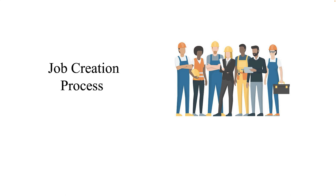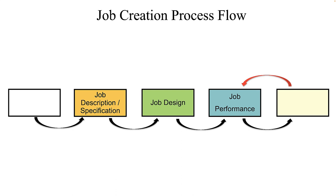Before a manager can redesign a job, they have to know what the duties and tasks of the job actually are. You'd be surprised how little some direct supervisors know about their subordinates' jobs. This is the job creation process flow from job analysis to job redesign and all points in between. There are some recommended formal steps in the job analysis process, which yields the job description and job specification. Those two things then lead to the process of job design, which then leads to job performance.